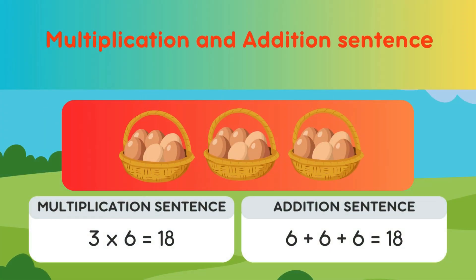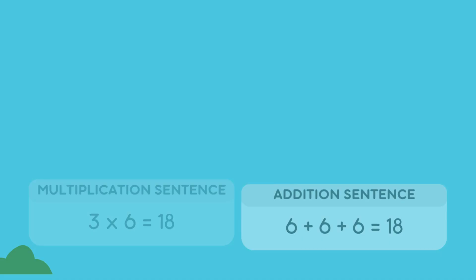And this one: the Multiplication Sentence is 3 times 6 equals 18! Because there are 3 baskets and inside the baskets are 6 eggs. So, the Addition Sentence is 6 plus 6 plus 6 equals 18! Yay!